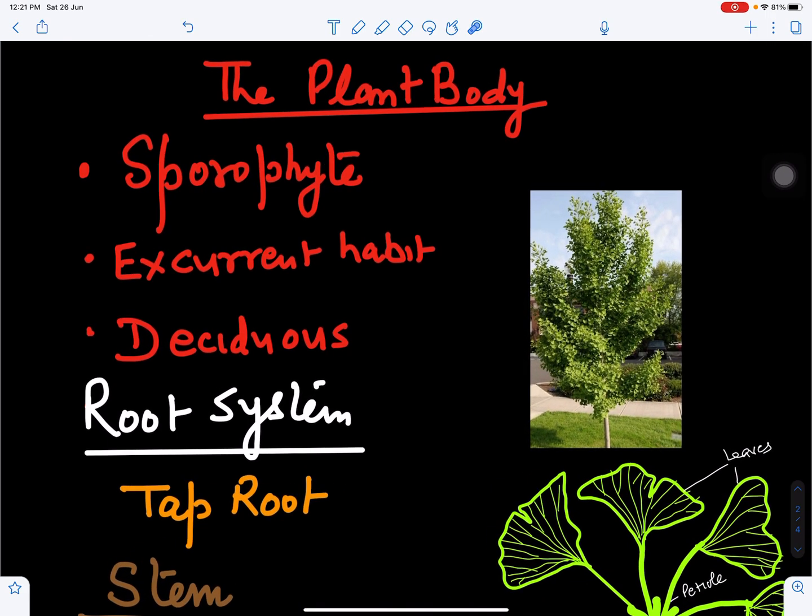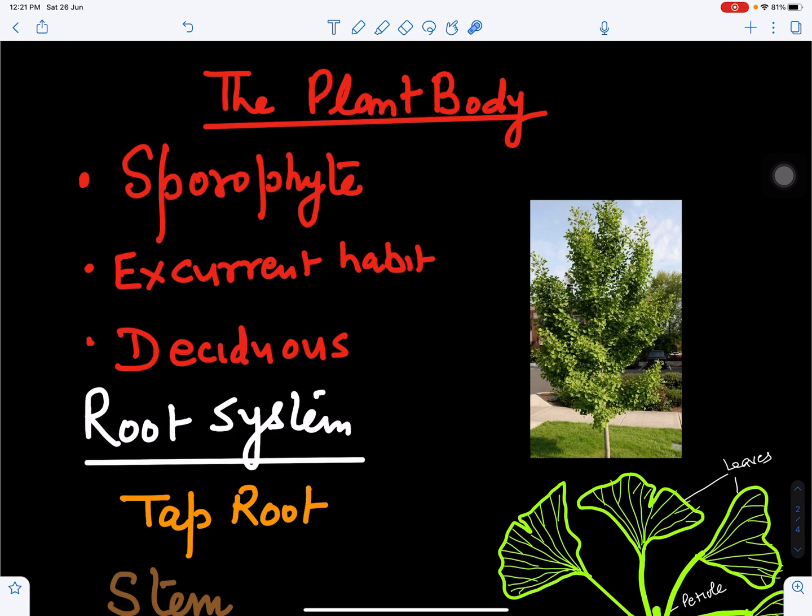The main plant body of Ginkgo is sporophyte and its pattern of growth is excurrent habit. Lower branches spread more compared to the upper branches. It is deciduous in nature; leaves fall off in the autumn season.